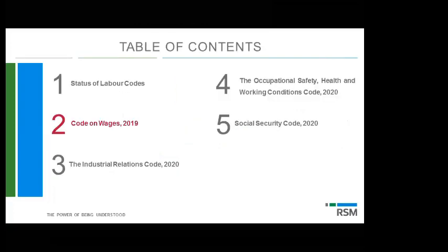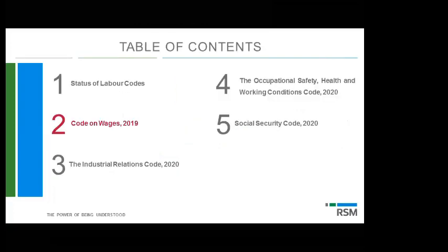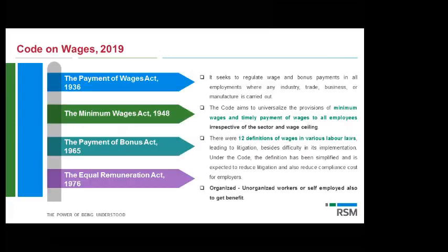The Code on Wages subsumes a host of regulations: the Payment of Wages Act 1936, the Minimum Wages Act 1948, the Payment of Bonus Act 1965, and the Equal Remuneration Act 1976. All these laws get subsumed into the new Code on Wages 2019, which deals with everything connected with the payment of wages and payment of bonus.